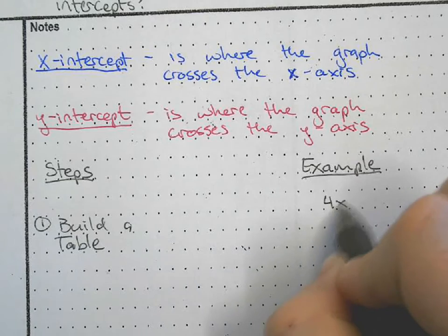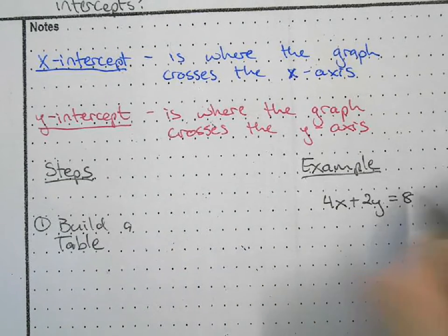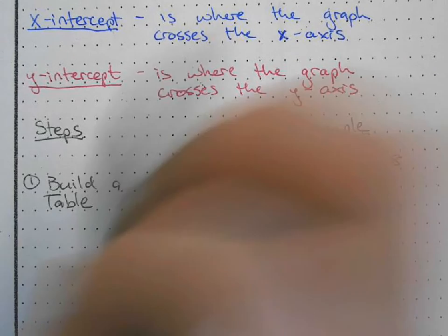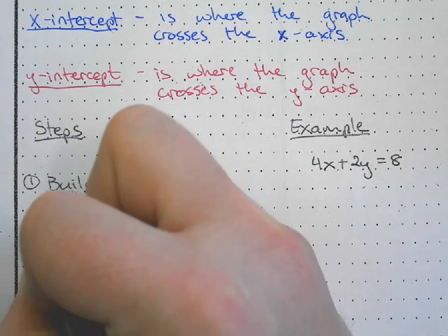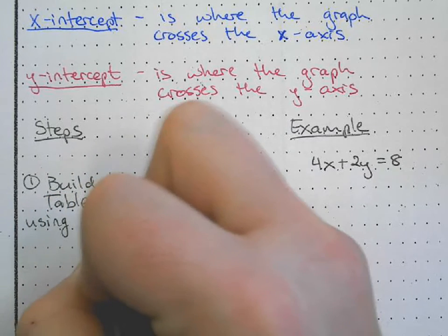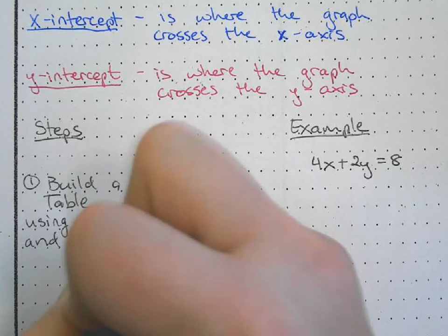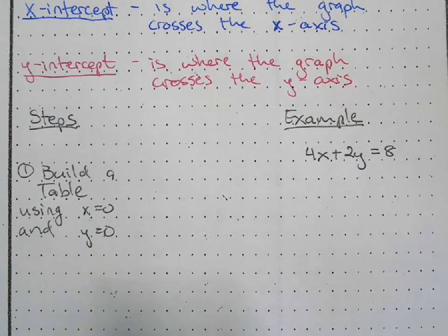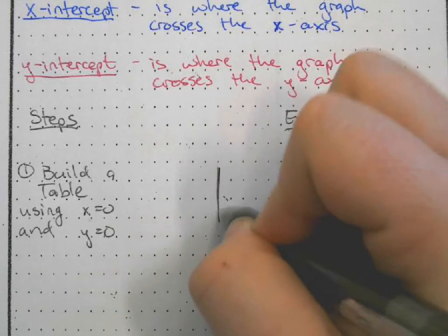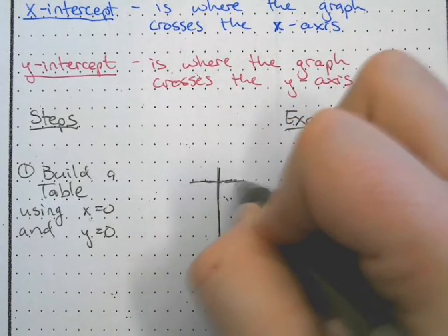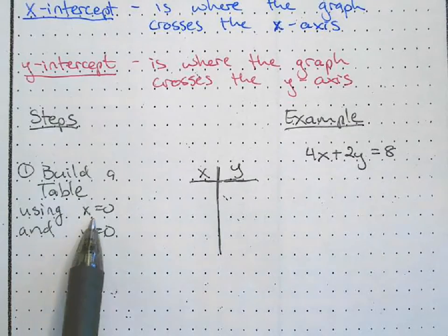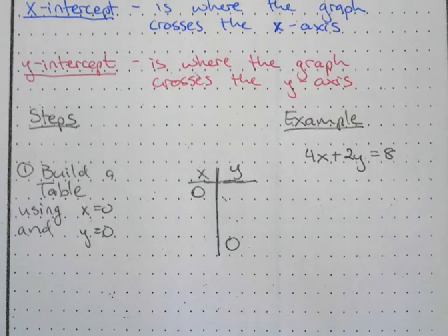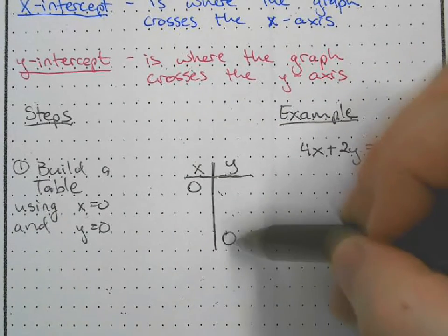Let's say I'm graphing 4x plus 2y equals 8. We're going to build a table using x equals 0 and y equals 0. The table won't be given to us; we have to draw it ourselves with x and y columns. We're only going to find two values.